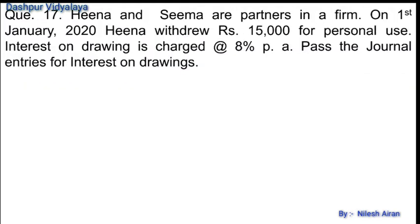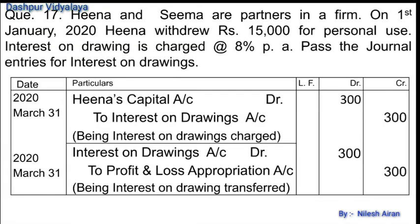Next question: Hina and Sima are partners in a firm. On 1st January 2020, Hina withdrew rupees 15,000 for personal use. Interest on drawings is charged at the rate of 8% per annum. Pass the journal entries. Hina's capital account debit to interest on drawings. She withdrew on 1st January 2020, so 8% of 15,000 = rupees 1200 for the full year, charged for 3 months = rupees 300.